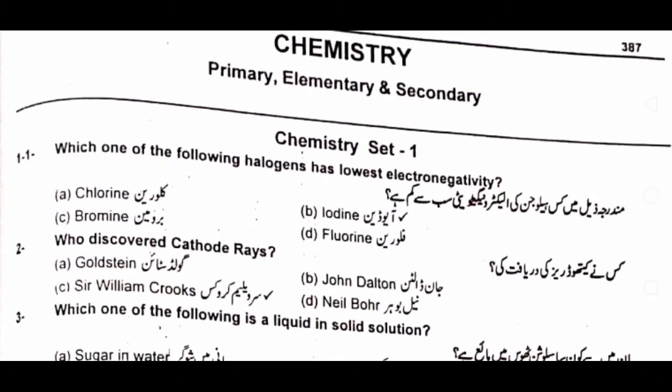Question number one: which one of the following halogens has the lowest electronegativity? A) chlorine, B) iodine, C) bromine, D) fluorine. The answer is B) iodine. Question number two: who discovered cathode rays? A) Goldstein, B) John Dalton, C) Sir William...